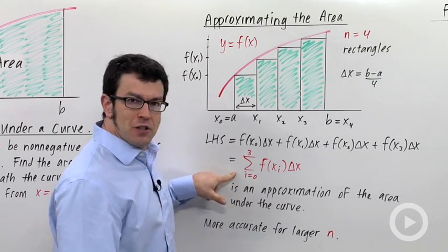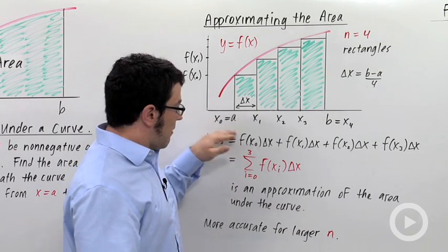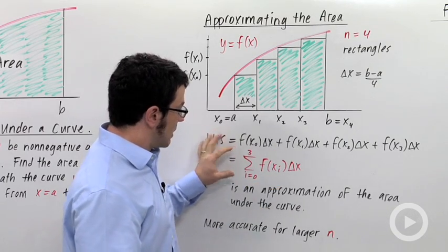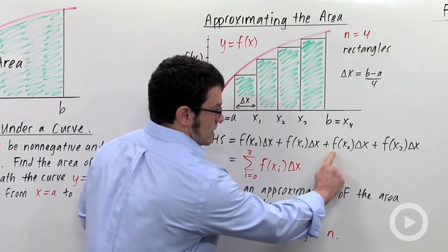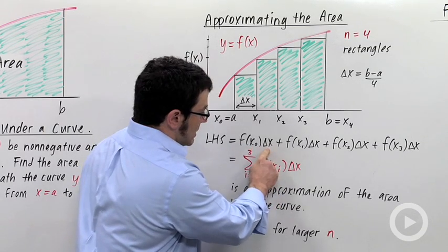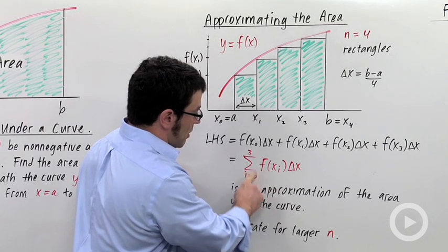This is the way that summation is written in shorthand. This is called sigma notation. When the sums have a lot of terms, it's much more convenient to use this notation. Notice, every term in this sum has the form f(xᵢ) times Δx. This i is the index of the sum, and we're going from 0 to 3.